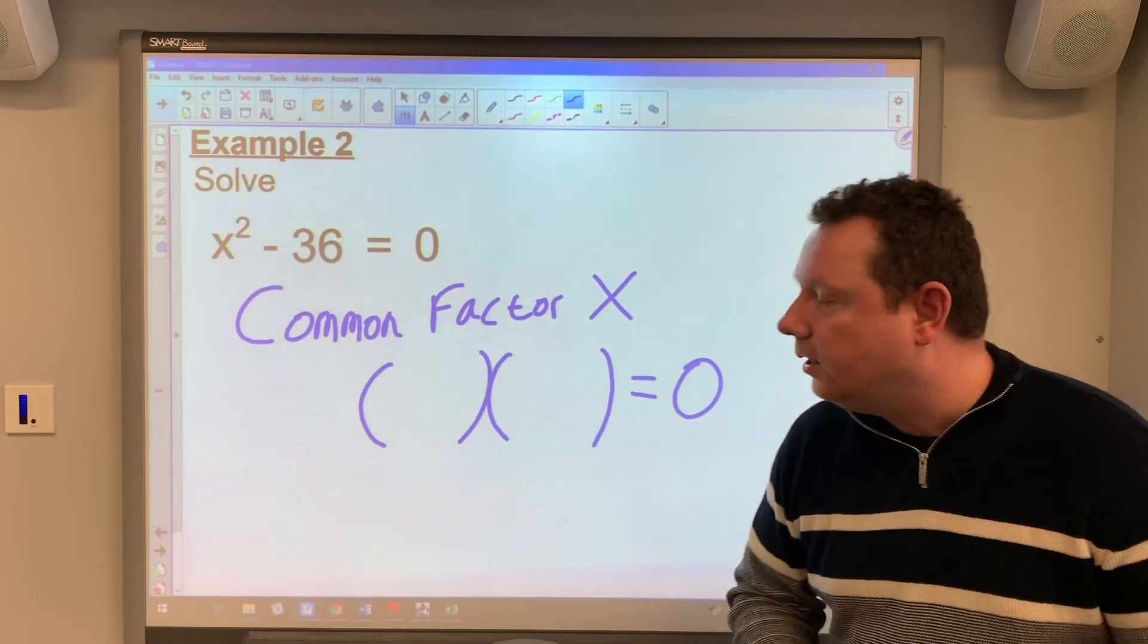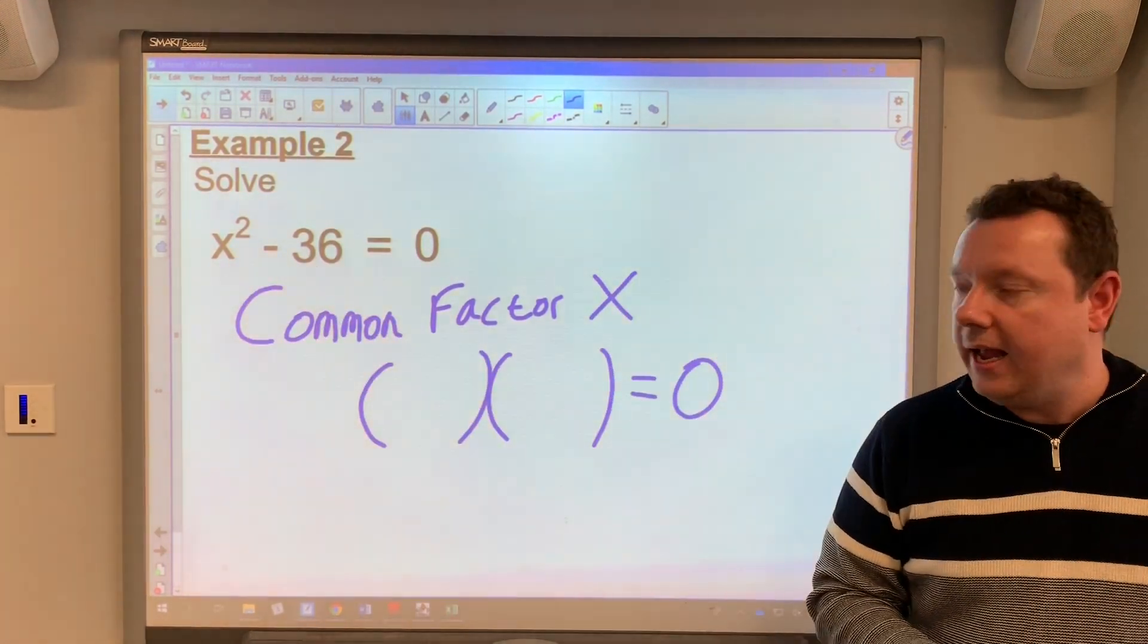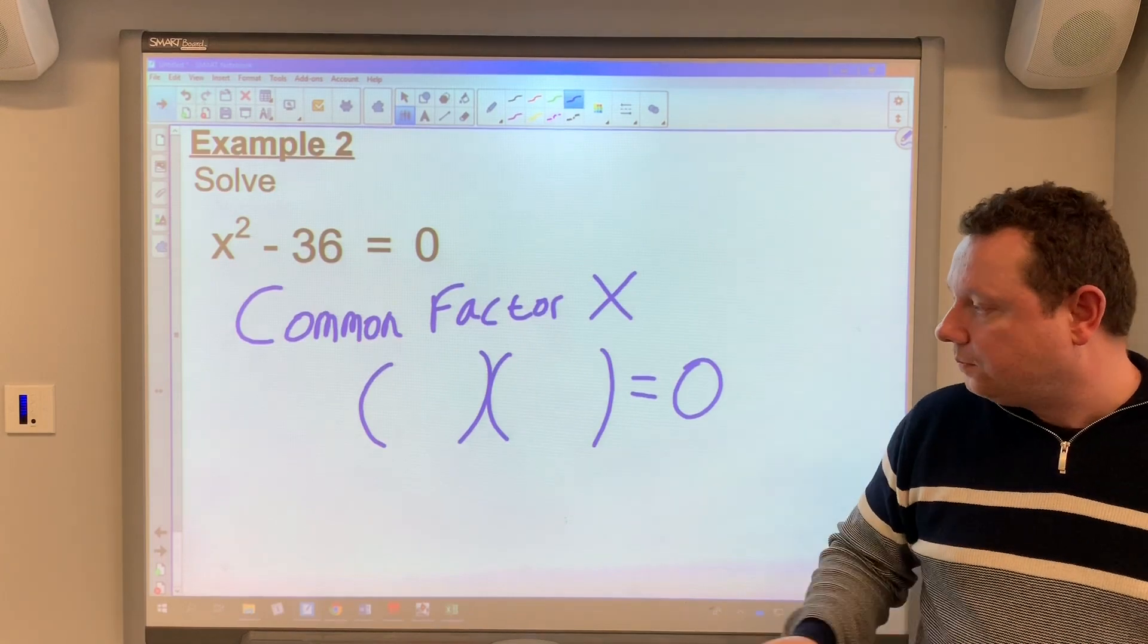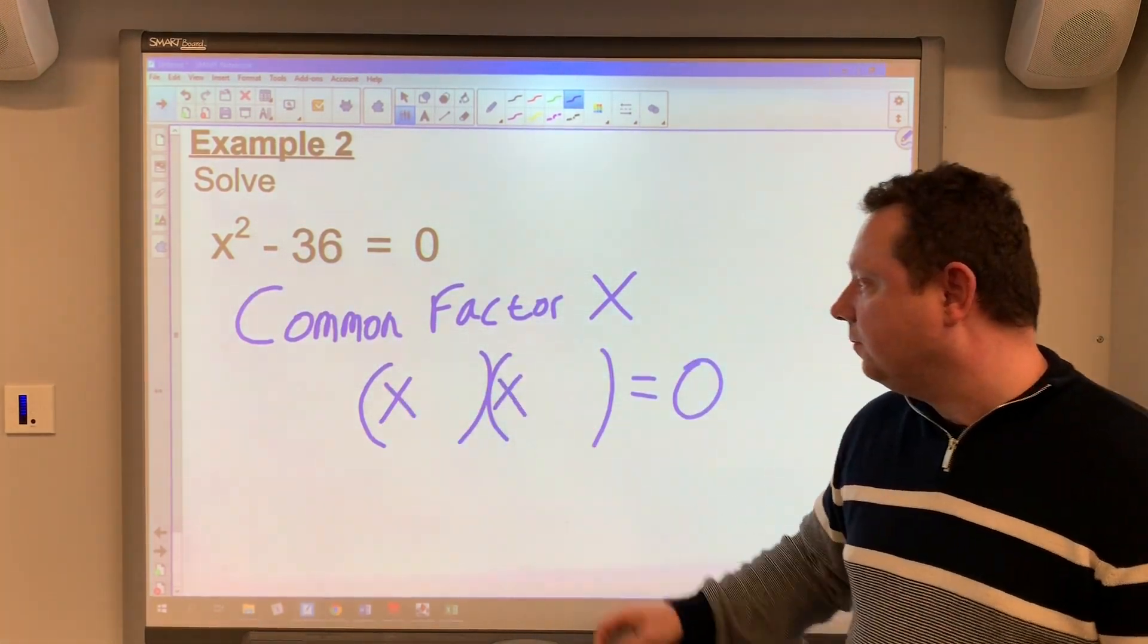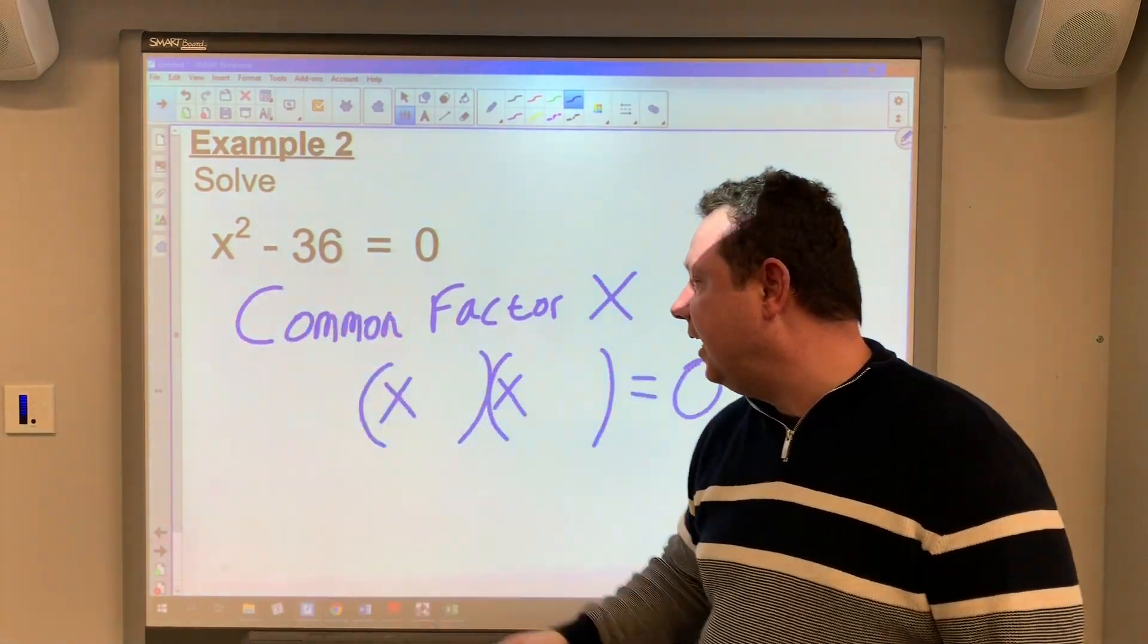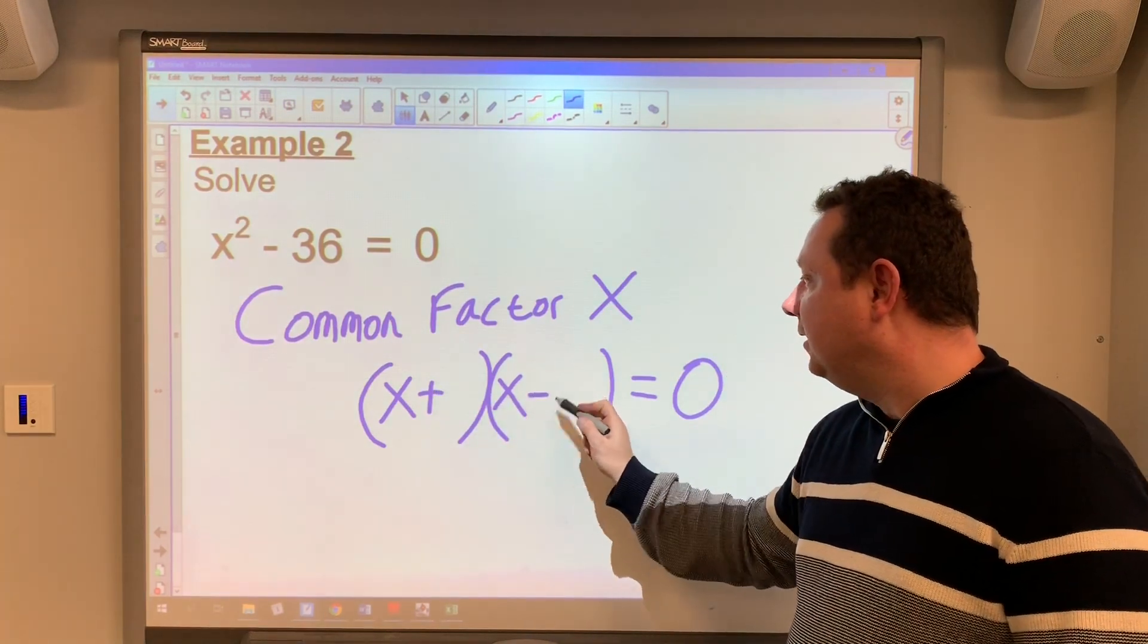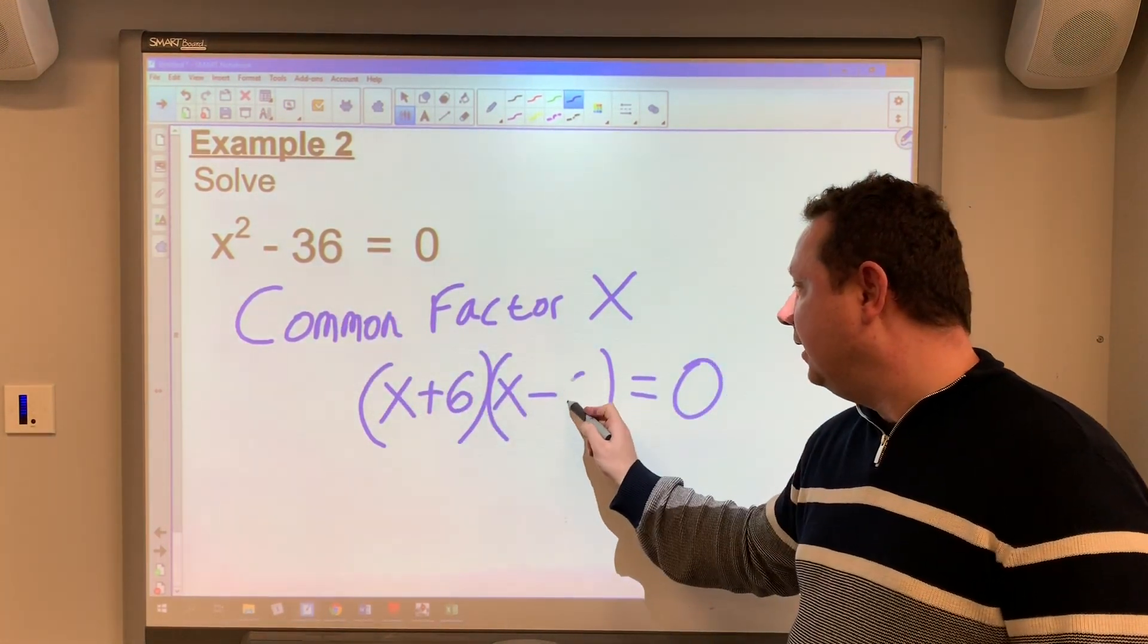So from previous work, this is called a difference of two squares. So when you've got x² and then a square number, the answer is very immediate. I've got x and x. Difference because minus. So x² - 36. So I've got a plus. I've got a minus. The square root of 36 is 6. So it's 6 and 6.